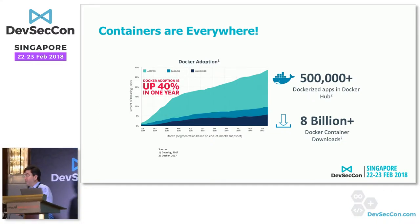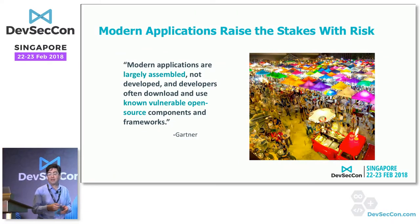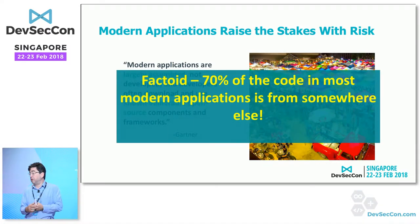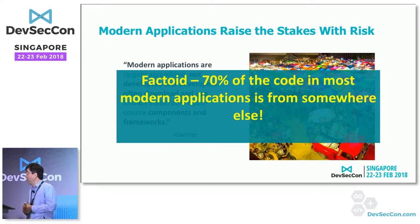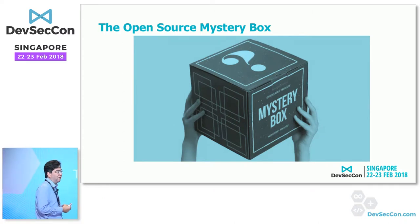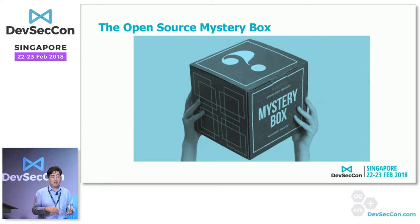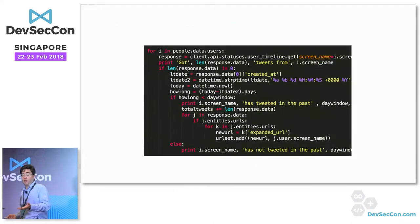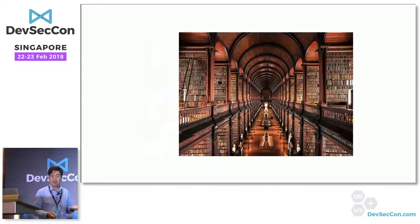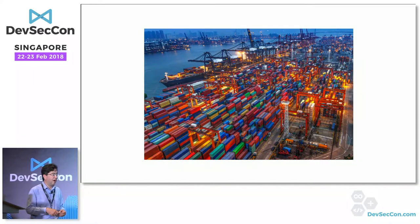Modern applications raise the stakes with additional risk. On average, about 70% of the code in most modern applications is something you're leveraging from somewhere else — and it may end up being a kind of black box. Everyone loves open source, but who's maintaining it? How much risk is the open source you're pulling into your build process exposing you to, whether it's a library, source code, or an already-containerized application?